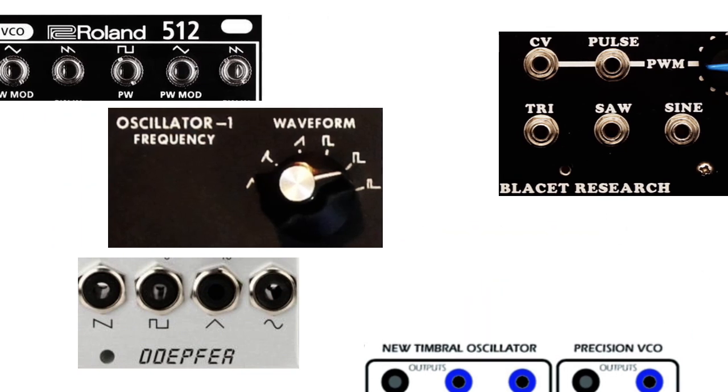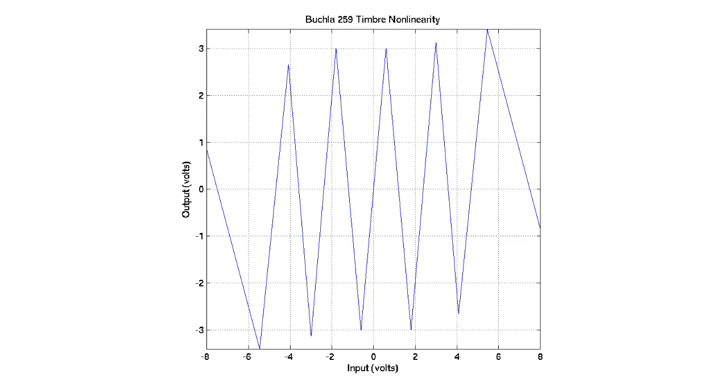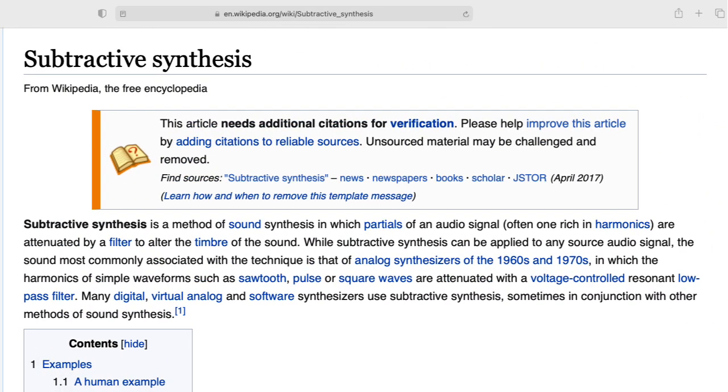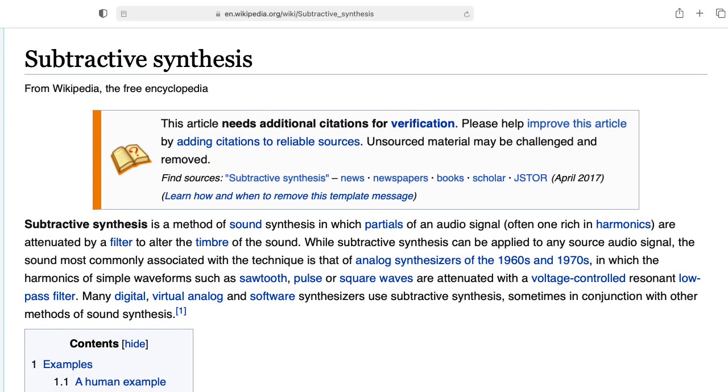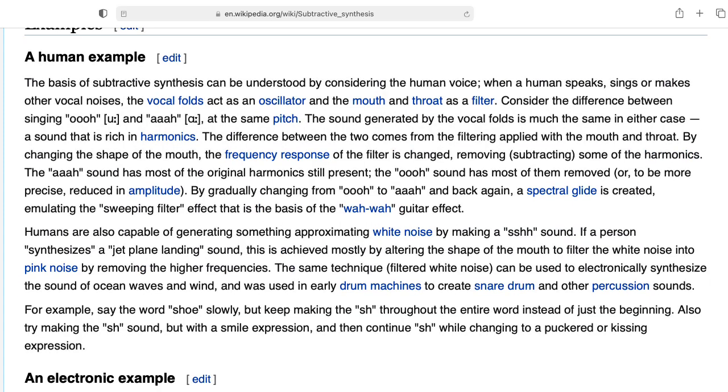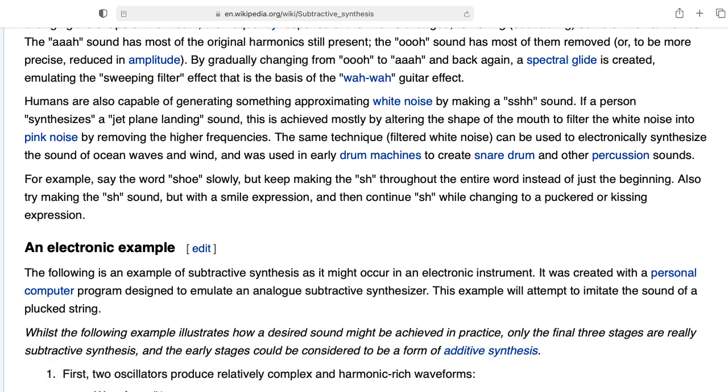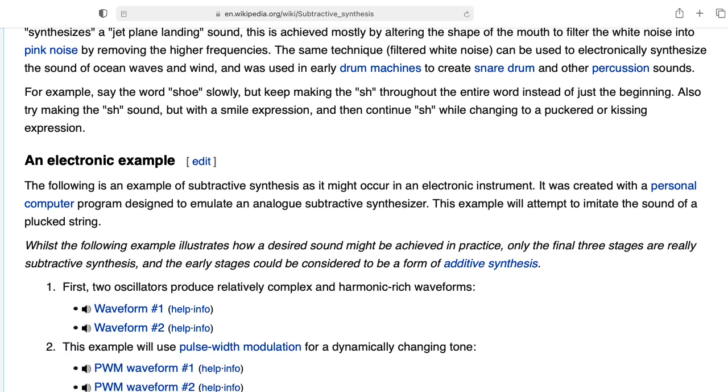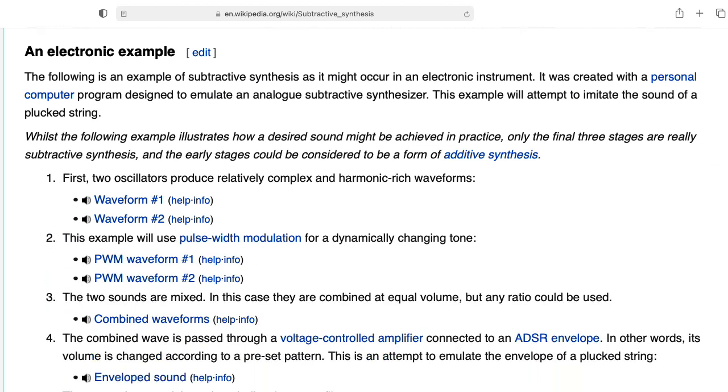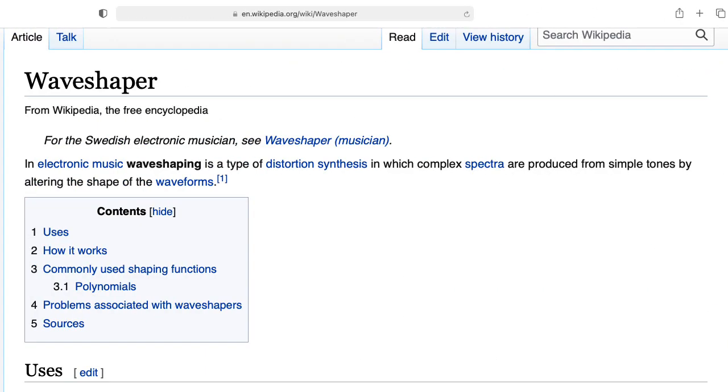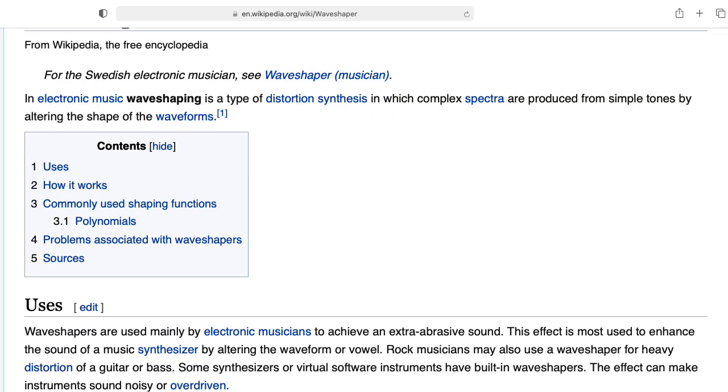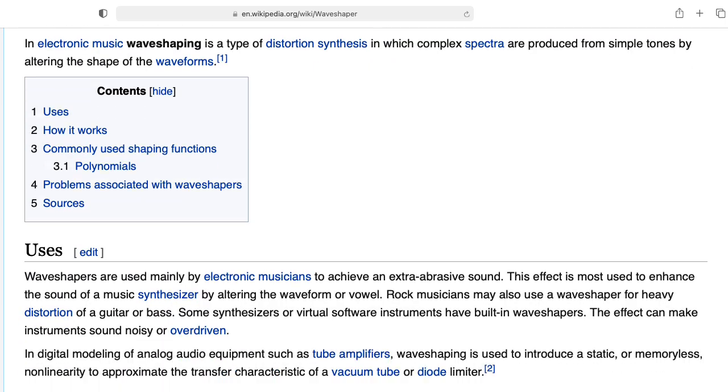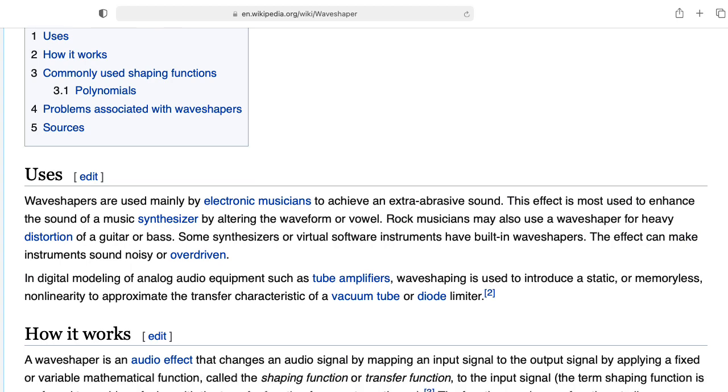Here we're going to start looking at nonlinearities that are much more complicated. Usually to develop complicated sounds that evolve over time, subtractive analog synthesis took things like square waves and sawtooth waves and passed them through linear filters. Here we're going to look at creating complicated time-variant spectra by passing simple waveforms through complicated nonlinearities.